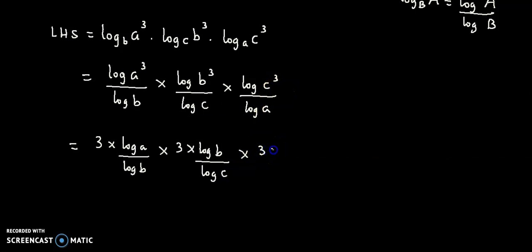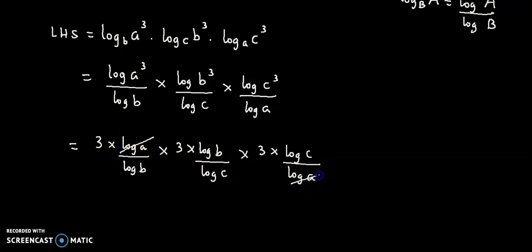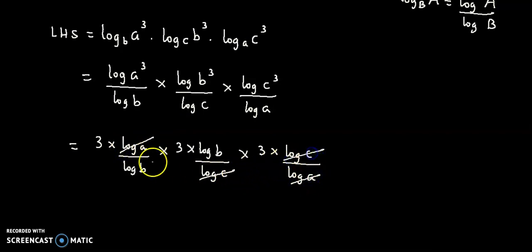Applying the change of base theorem, each term expands as 3 times log a upon log b, times 3 times log b upon log c, times 3 times log c upon log a. Now, log a cancels with log a, log c with log c, and log b cancels with log b.